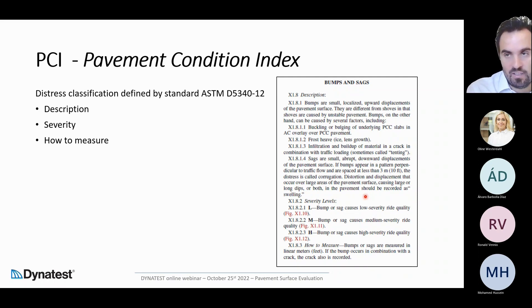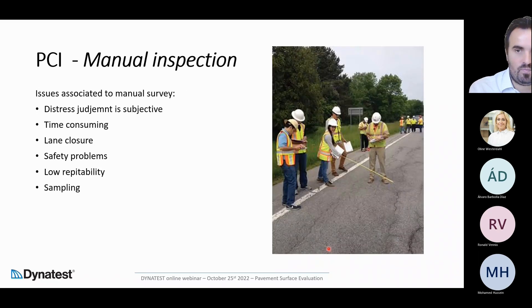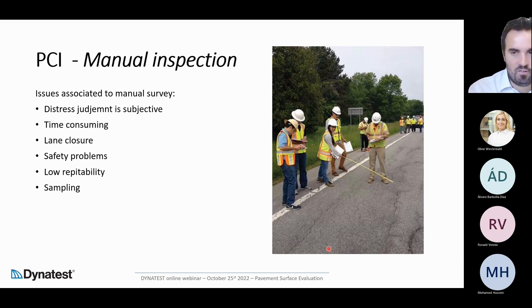It's important that we also know how to measure — the standard reports the way each single distress has to be rated and how the information has to be reported. After defining which standard to use, and the standard providing information on how to rate each single distress, we need to go on the road or airport and start rating. The oldest method, still sometimes used today, is manual inspection.